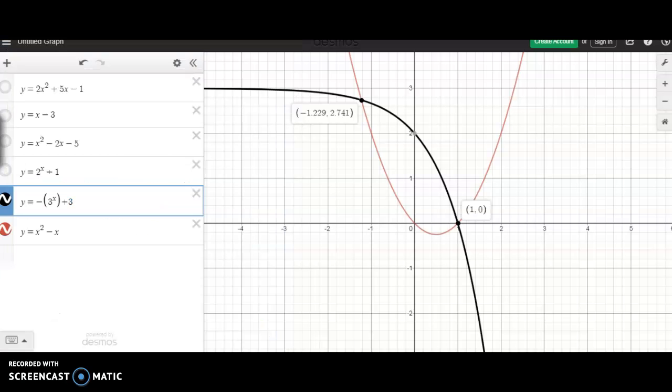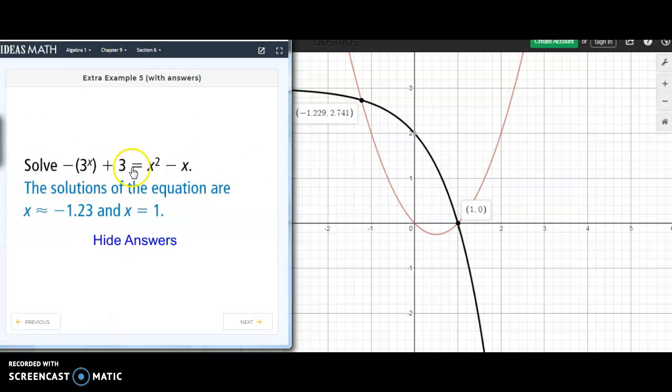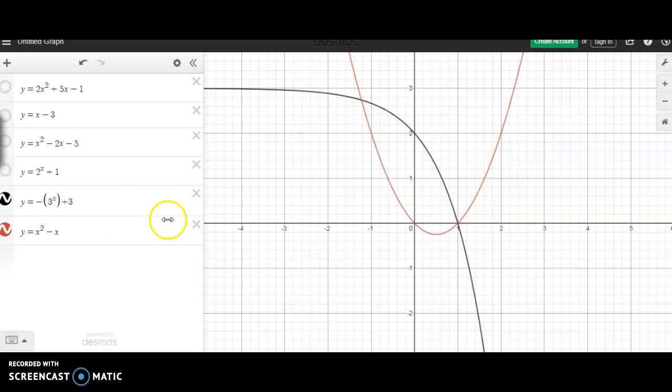So, again, we've seen that solving systems by graphing could be used for a variety of combinations. The last example being the most interesting part in which we started with solving an equation, and then we wrote each side of the equation as two different functions. And then, we graphed them to figure out where their intersections are.